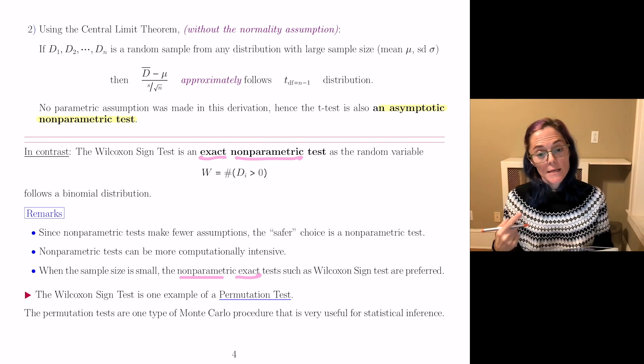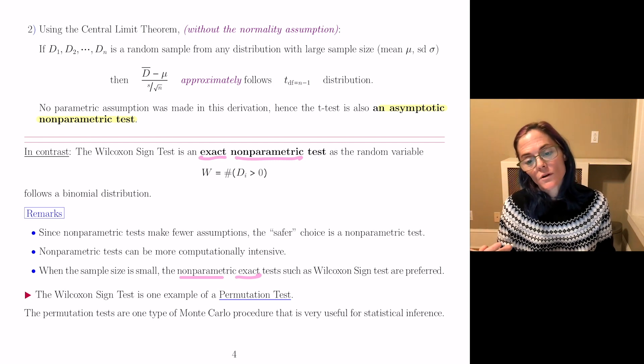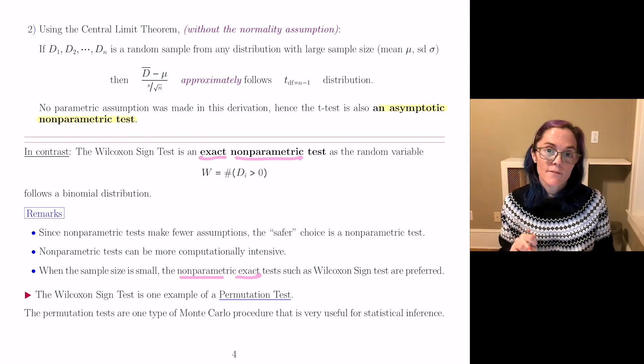The Wilcoxon sign test is one example of what's called a permutation test. Generally, the permutation tests are a type of Monte Carlo procedure that is very useful for statistical inference.